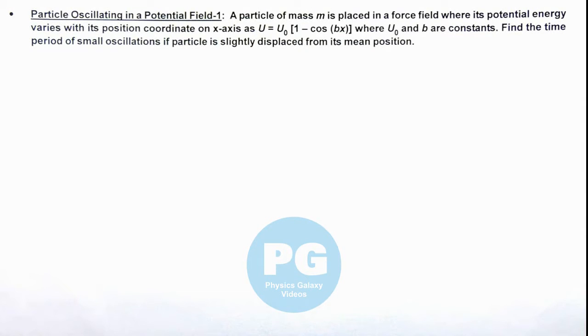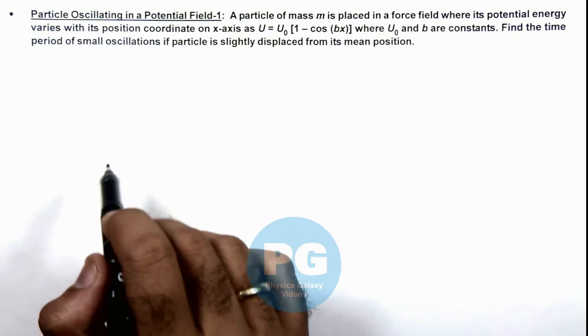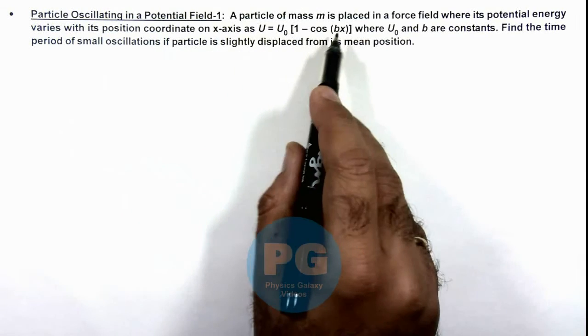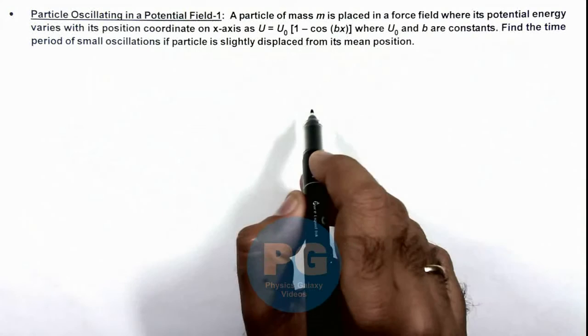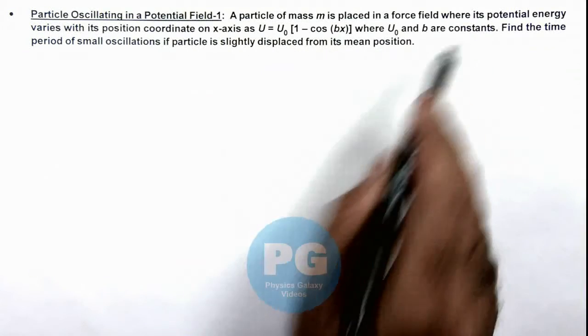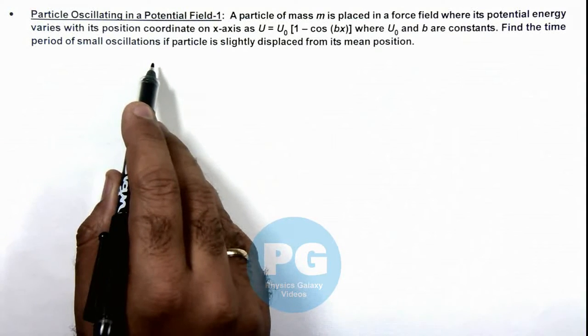In this illustration we will discuss a case of particle oscillating in a potential field. Here we are given that a particle of mass m is placed in a force field where its potential energy varies with position given by this expression, where U₀ and b are constants. We are required to find the time period of small oscillations of this particle.